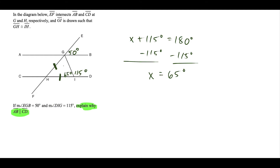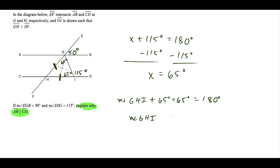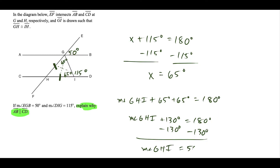Now, by the isosceles triangle theorem, since GH equals IH, the angles opposite those congruent sides are congruent. So if angle GIH is 65 degrees, then angle HGI is also 65 degrees. The three angles of triangle GHI must sum to 180 degrees: angle GHI plus 65 plus 65 equals 180, so angle GHI equals 50 degrees.